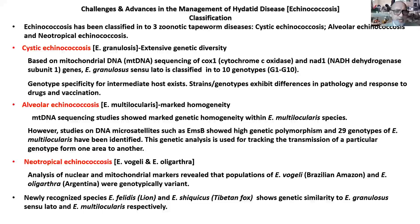Neotropical echinococcus is caused by echinococcus vogeli and echinococcus oligarthrus, very rare and found particularly in South America. Analyses of nuclear and mitochondrial markers show they are genotypically variants — nearly the same but with two variants. Recently, new parasites have been described where the definitive host is a lion and another where it is a Tibetan fox. These have been classified based on genetic studies, making such research important.